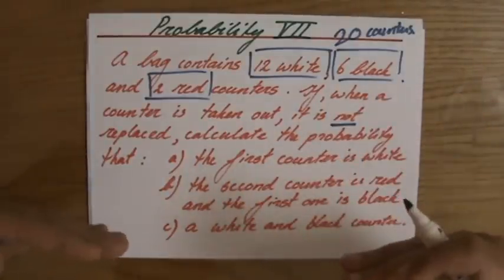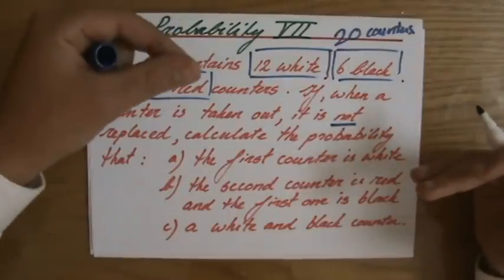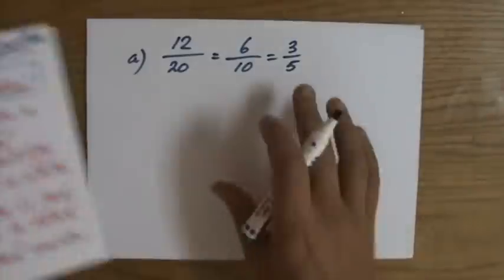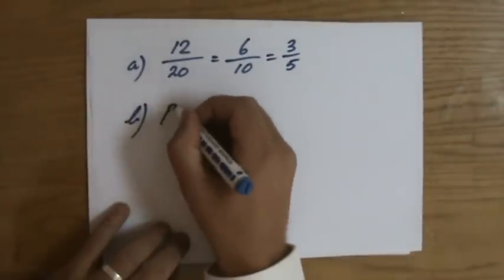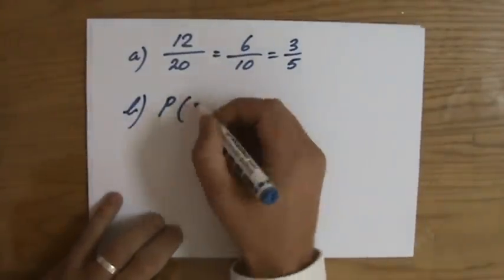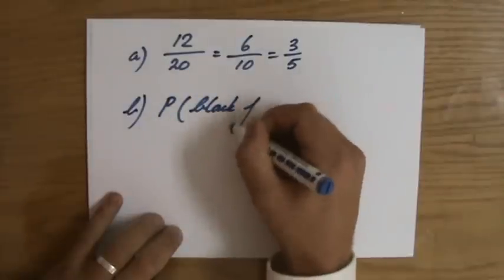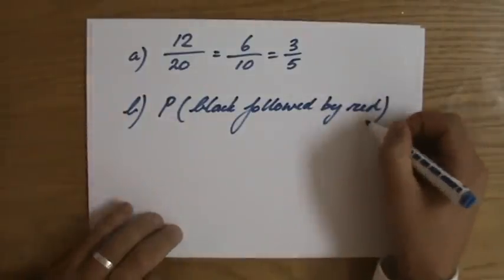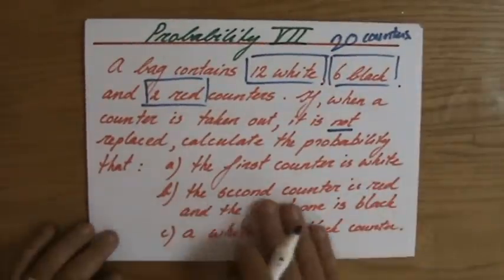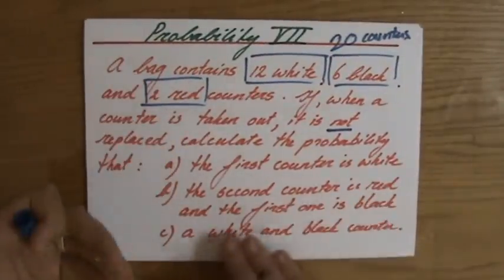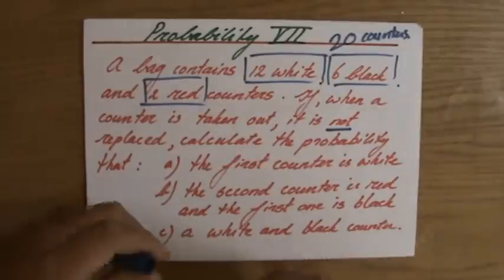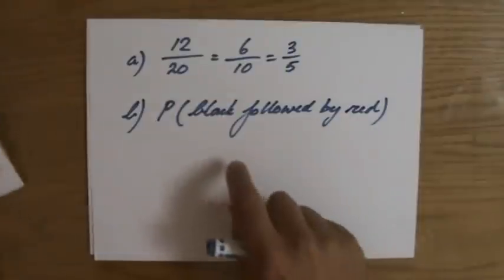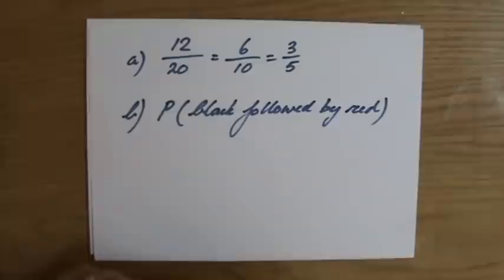But now, the second question. You have to do two things. The second counter has to be red, and the first one has to be black. What is the chance of that happening? So, P of the first one has to be black. So I'm saying black, followed by red. Back to the question. The second counter is red, and the first one is black. So they don't just say a black and a red one. No, it's really a specific order. A red, and before that, a black. Even if you turn it around, so it has to start with a black one, and then followed by a red one.